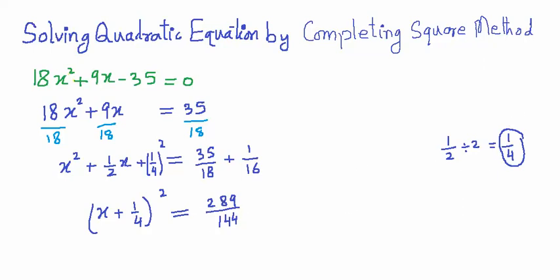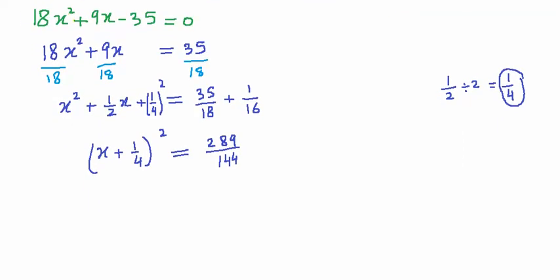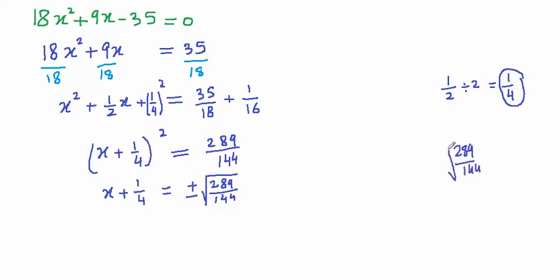The next step is to take the square root of both sides. Remember, whenever we take the square root of both sides we put a ± sign. Taking the square root of the left side removes the square, giving x + 1/4, and the right side becomes ±√(289/144).